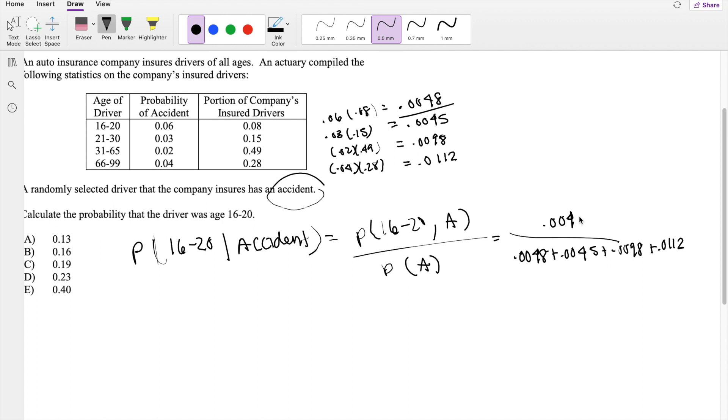0.0048. So let me plug that into my calculator. So this is equal to 0.0048 divided by 0.00303, which is approximately equal to 0.1584, approximately equal to 0.16, or answer B.